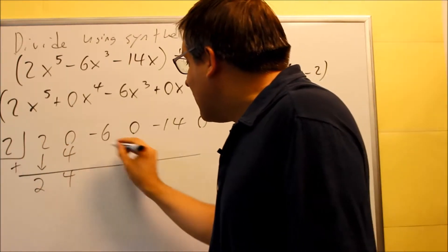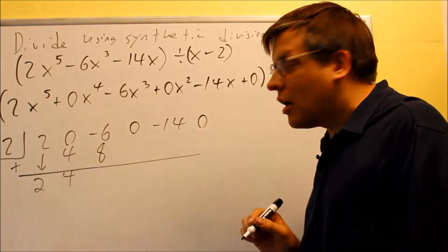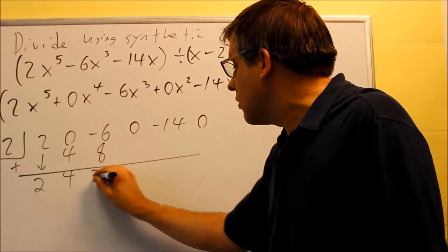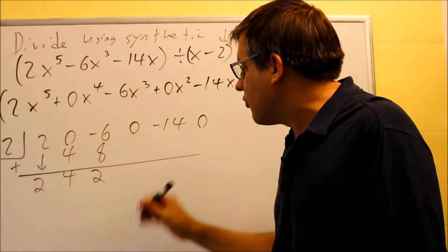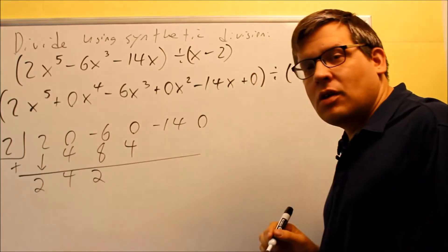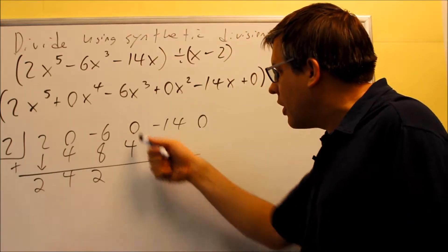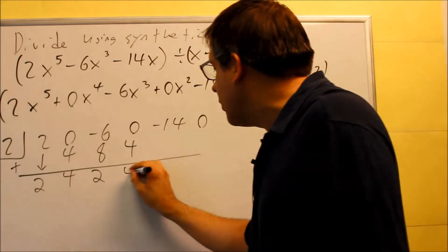4 times 2 is 8. Goes underneath the next column. Add that together, you get 2. 2 times 2 is 4. That goes underneath the next column. Add that together, you get 4.